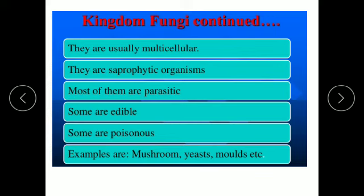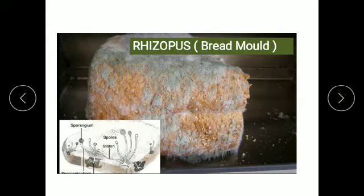We will study the structure of bread mold, also called Rhizopus, in detail. Rhizopus or bread mold is a fungus which can be found on the surface of fruits, vegetables, and stale bread.